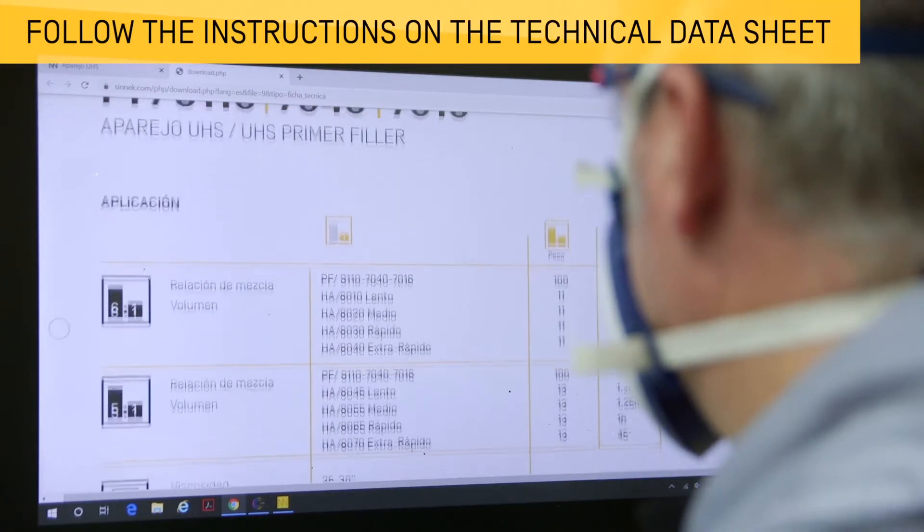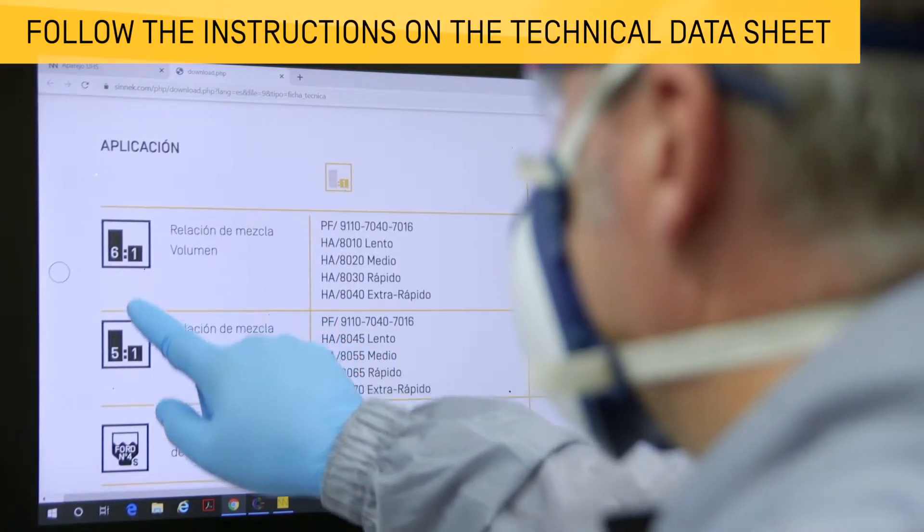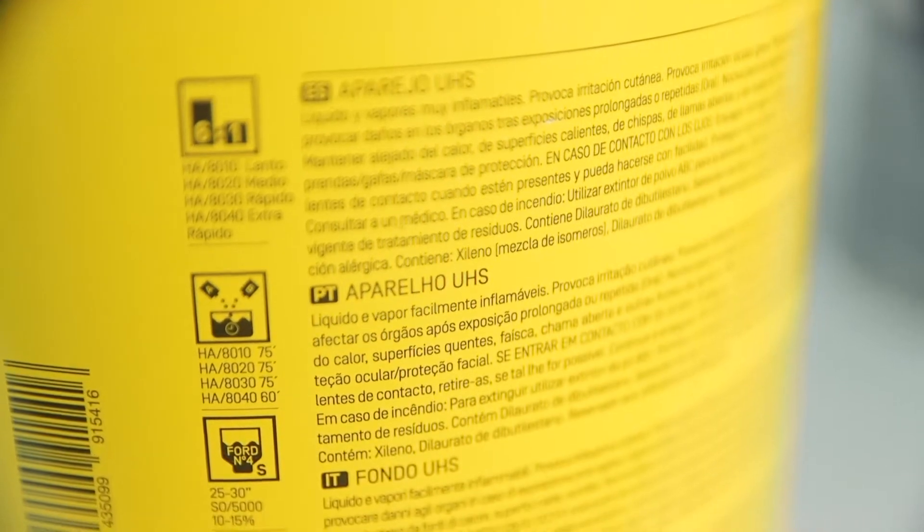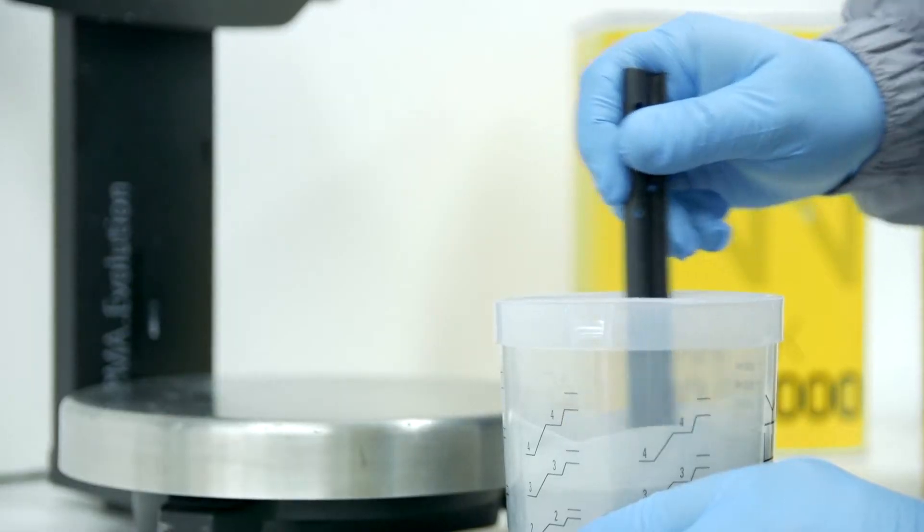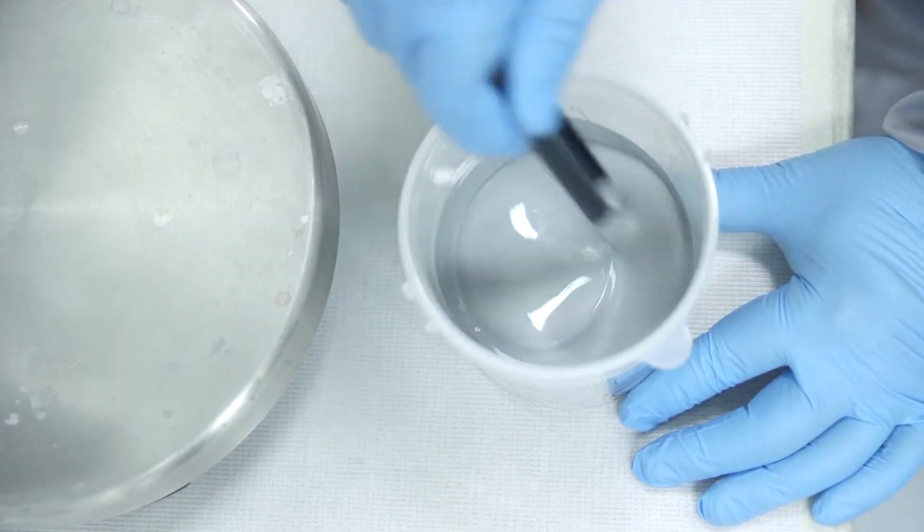Information on product mixing ratios can be found in their technical data sheets or on the packaging itself. There are different methods and tools that will help to obtain the correct mixing ratio.